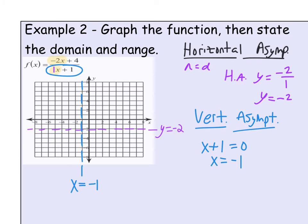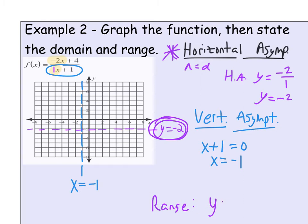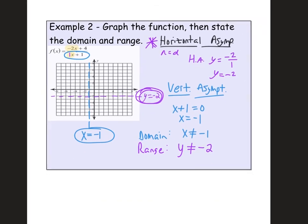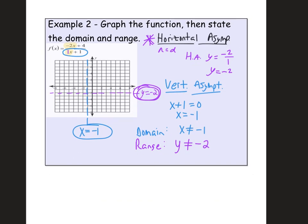The asymptotes connect directly to the domain and range. The horizontal asymptote blocks a y-value, removing it from the range. Since the graph won't pass through y equals negative 2, the range is all real numbers except negative 2. The domain is all real numbers except the vertical asymptote value, x equals negative 1.